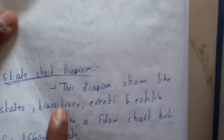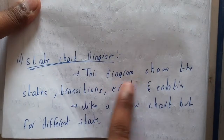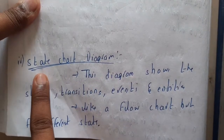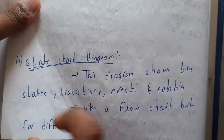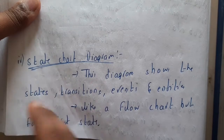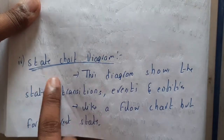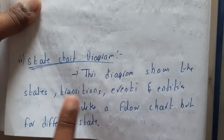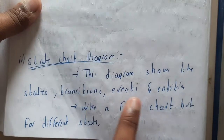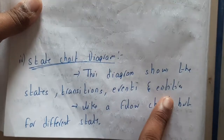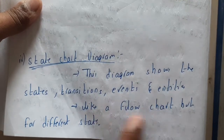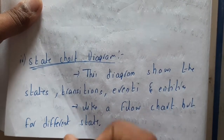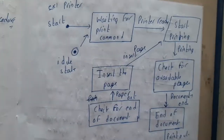Similarly, we have the state chart diagram — also called state space diagram. It shows states, transitions, events, and entries, similar to a flowchart. You can simply think of it as a flowchart.